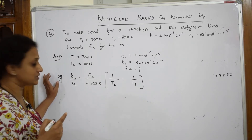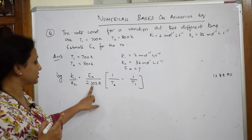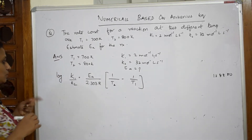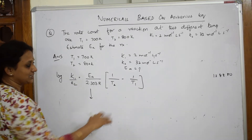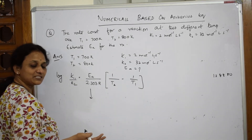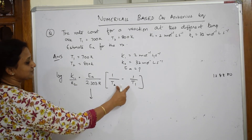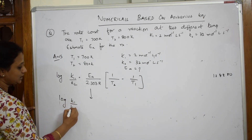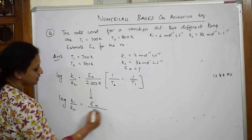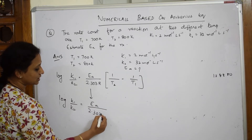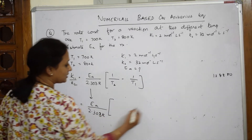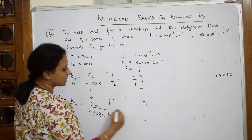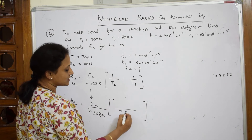Please go through the previous video for the derivation. Because of the log, we have written 2.303 here. Now, if I take LCM for the temperature terms, I get: log K1 by K2 is equal to Ea by 2.303 R, and I have written it in terms of T1 and T2.